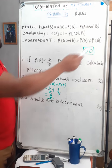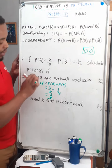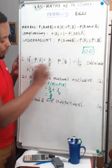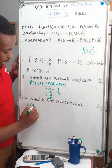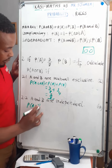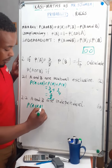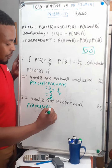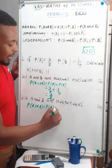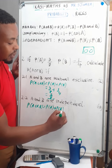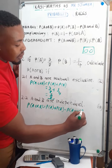We need to answer the question: calculate P(A or B). P(A or B) equals probability of A plus probability of B minus probability of A and B.